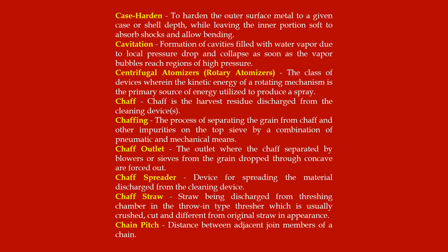Chaffing: the process of separating the grain from chaff and other impurities on the top sieve by a combination of pneumatic and mechanical means. Chaff outlet: the outlet where the chaff separated by blowers and sieves from the grain dropped through the concave are forced out. Chaff spreader: device for spreading the material discharged from the cleaning device.